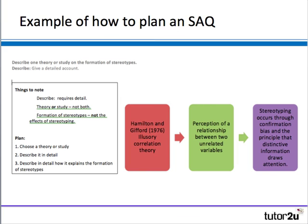Here's an example of how to plan a short answer question: 'Describe one theory or study on the formation of stereotypes.' The student will need to start with a definition of stereotype — psychology dictionaries offer plenty. The theory requires detailed description: Hamilton and Gifford's illusory correlation theory is a perception of a relationship between two unrelated variables. We then look for examples and empirical backup, dismissing counter-evidence through confirmation bias, with distinctive information drawing attention. Hamilton and Gifford also conducted a study on this.